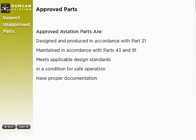Let's begin by talking about what qualifies an item to be listed as an approved part. Approved parts are items that are designed and produced in accordance with 14 CFR Part 21, maintained in accordance with 14 CFR Parts 43 and 91, and they meet the applicable design standards, are in a condition for safe operation, and have the proper documentation.